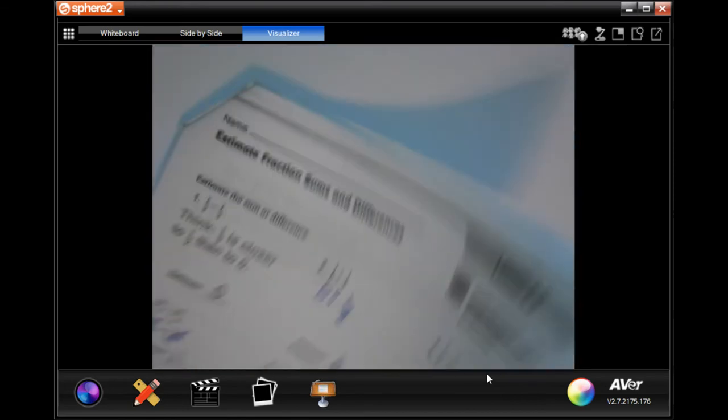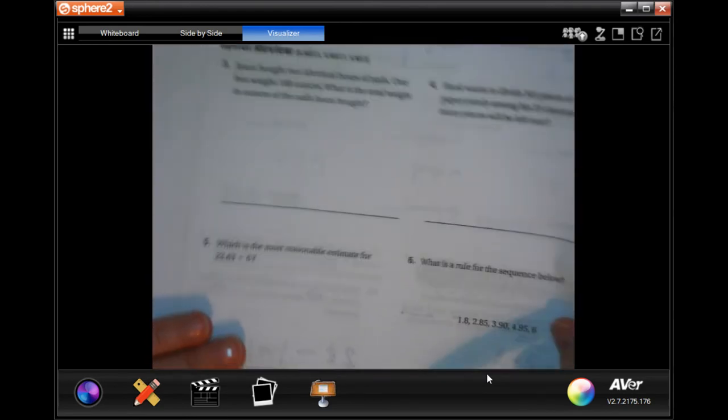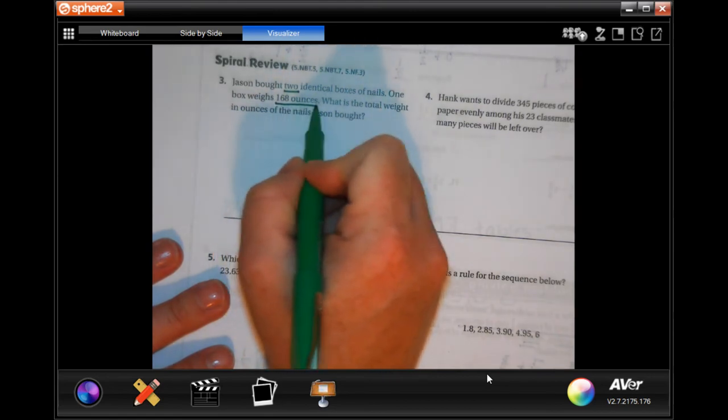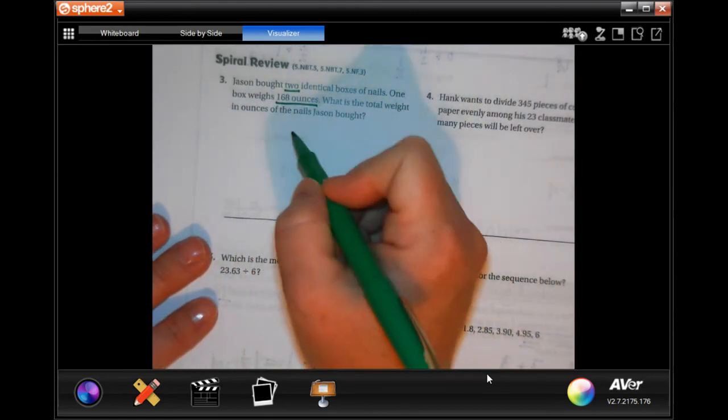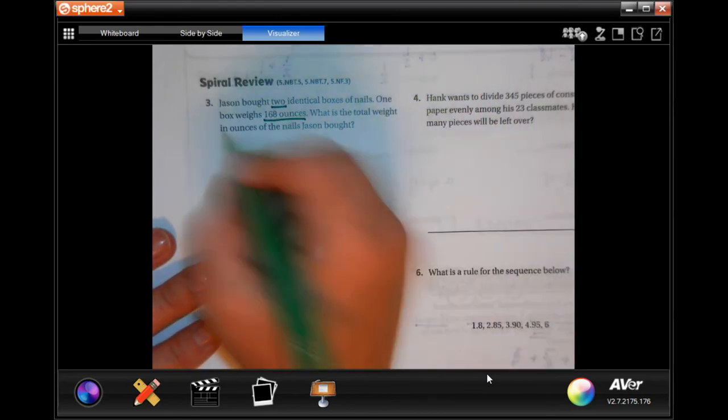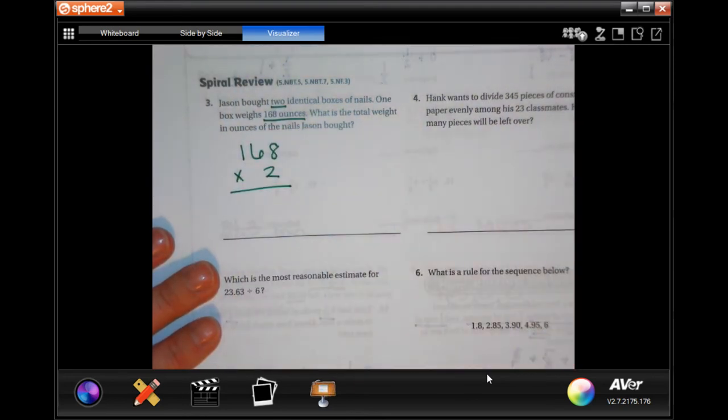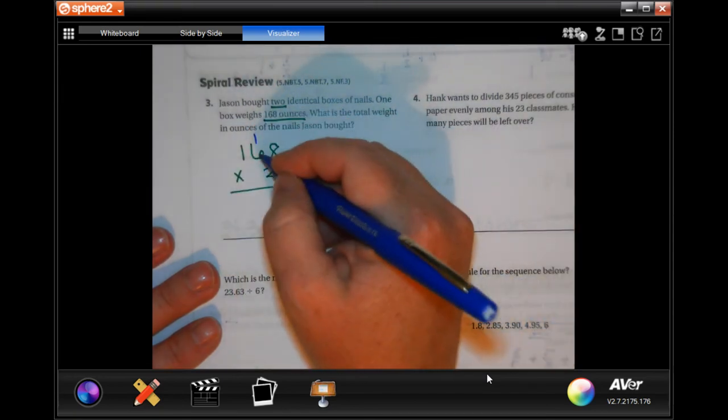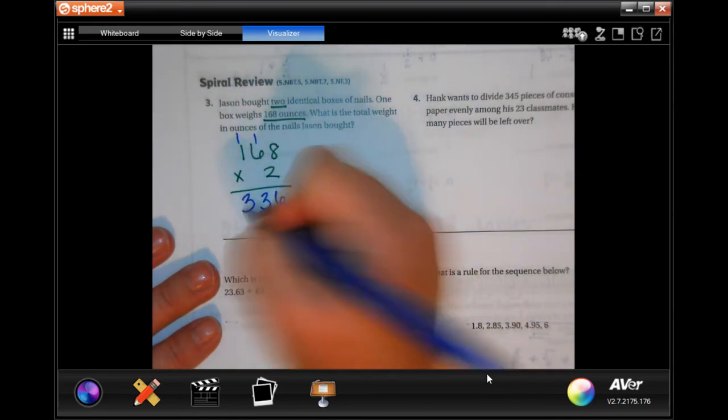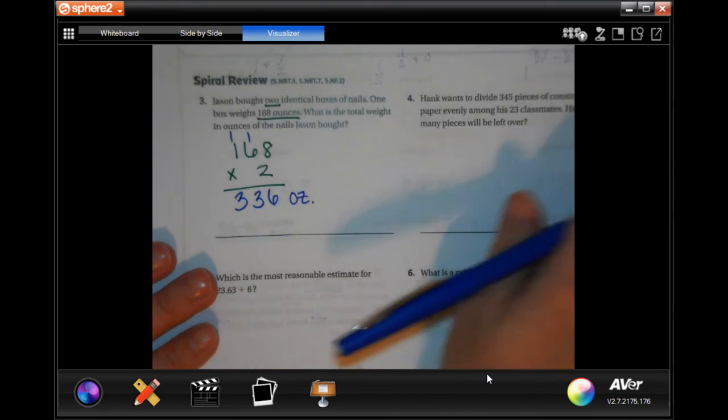All right, we're going to go on to the back where you guys are going to do the lesson check and the spiral review. Jason bought 2 identical boxes of nails. 1 box weighs 168 ounces. What is the total weight in ounces of the nails Jason bought? So we can add 168 and 168, or we can do 168 times 2. I tend to like multiplication better, so 2 times 8 is 16, carry the 1. 2 times 6 is 12 plus 1 is 13. 2 times 1 is 2 plus 1 is 3. Don't forget to put ounces.